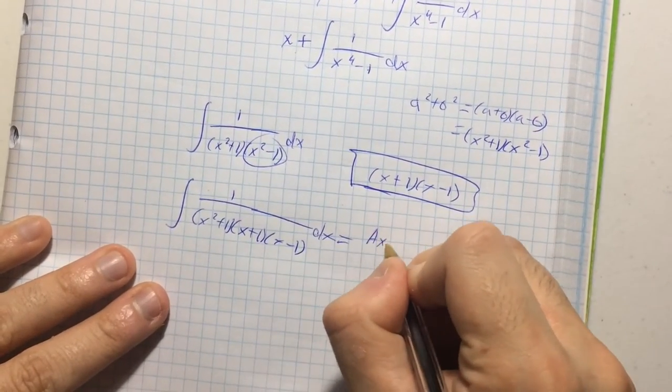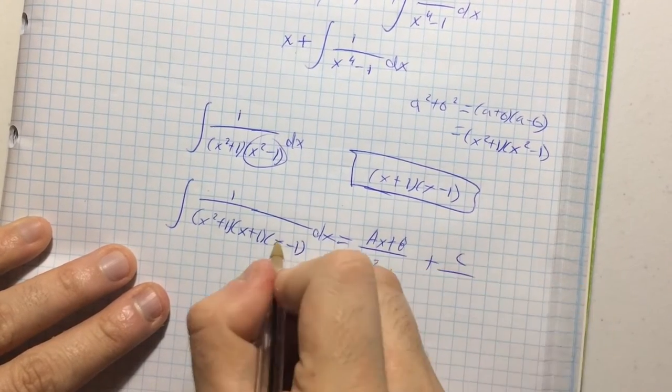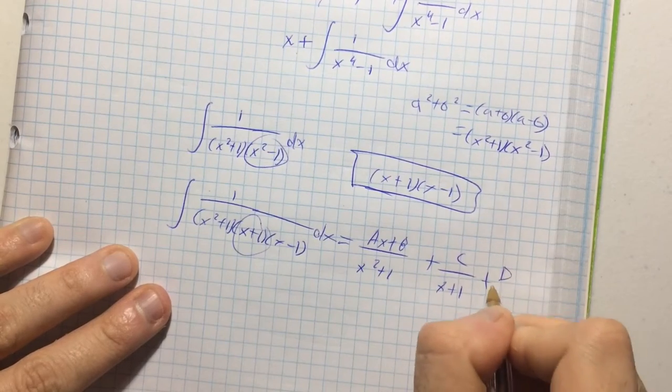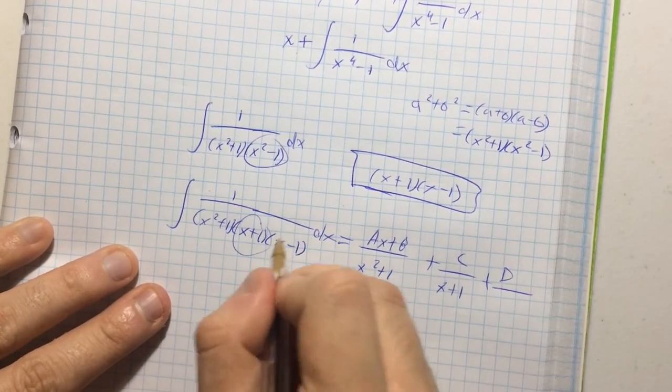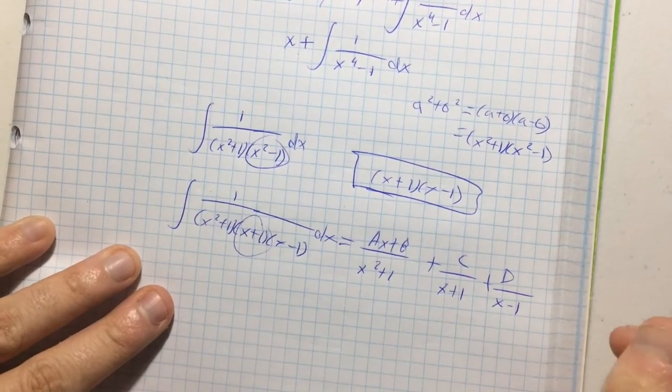So, this is going to be ax plus b over x squared plus one, plus c over this dude over here, plus d, divided by this dude here. So, I'm almost going off the page, but big deal, big whoop, yeah.